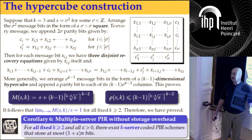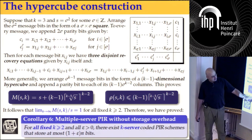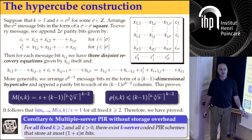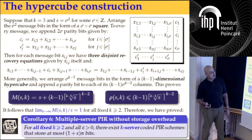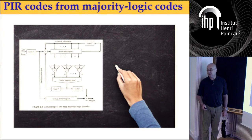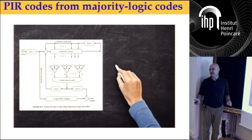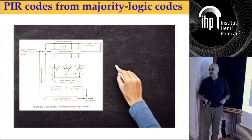This is a hypercube or cubic construction — also used in the context of batch codes in a different context — and shows that for all K, not only K equal two, we can achieve storage overhead going to one. But the redundancy of that construction is not very good.